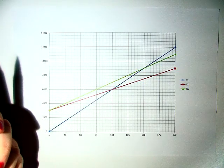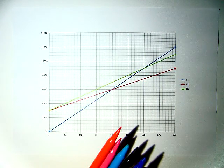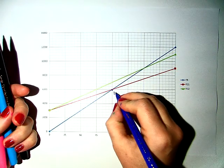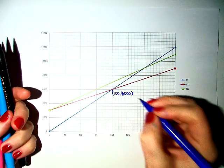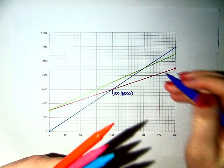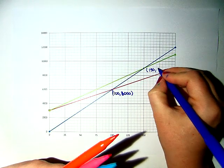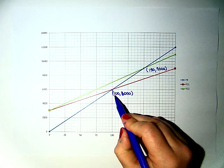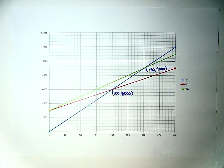So if we look at the graph, our original cost would be here at 100, 6,000. But when the variable cost increased by 10 dirhams, it went up to 150, 9,000. So this just a 10 dirham increase caused us to have to sell 50 more units in order to turn a profit.